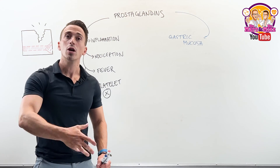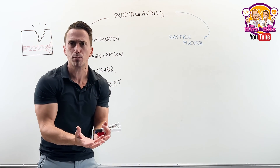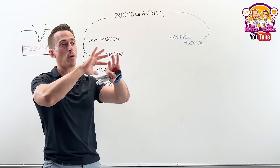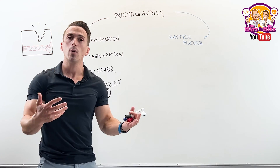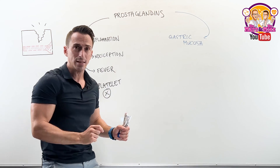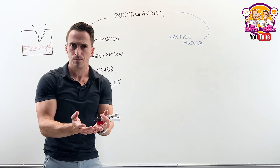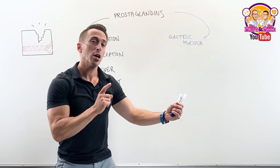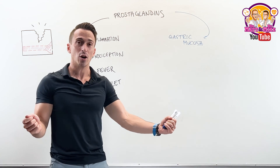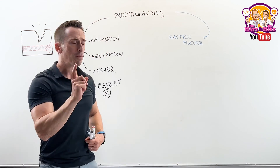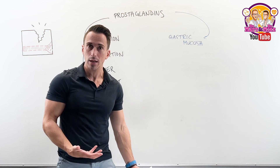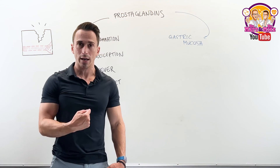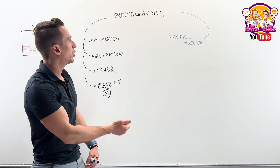Our stomach produces hydrochloric acid, which is important to unravel complex proteins. Proteins are three-dimensional quaternary structures — amino acids folded in upon themselves. To digest and break them down to absorb individual amino acids, we first need to unravel them. Think of a ball of yarn: it's much easier to unravel before you chop it. The hydrochloric acid unravels the protein, then proteases chop it up. But our stomach itself is made of proteins — so what stops it from digesting itself? Thanks in part to prostaglandins, we have a mucosal lining of bicarbonate that protects the stomach.